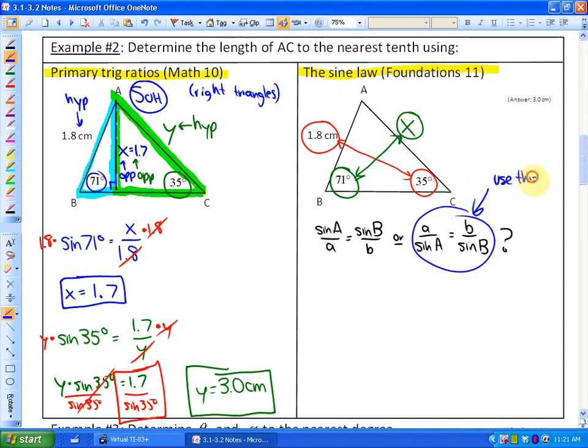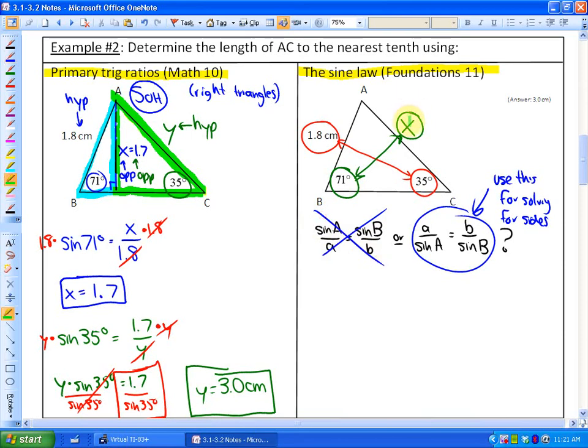So use this for solving for side lengths. What we're also going to do is always place the unknown in the numerator of your first proportion. So in this particular case, your sine law would look like this: x over sin of its opposite angle, which is 71 degrees, equals 1.8, which is right here, over the sine of its opposite side, which is over sin 35. So to solve algebraically, we've now set up the sine law.